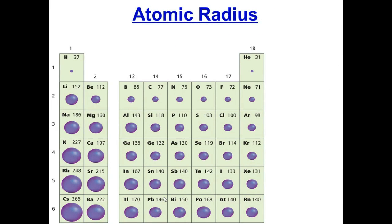Here is a chart showing the periodic trend of atomic radius. The largest atoms are in the bottom-left corner, and the smallest is helium in the top-right. As we go down we have more rings, making atoms larger. As you move from right to left there are fewer protons, so electrons experience less attractive force.